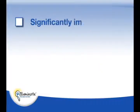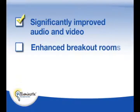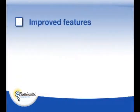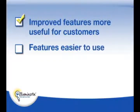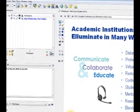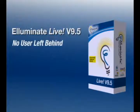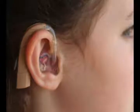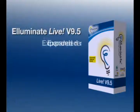Some of the things included in Eliminate Live version 9.5 include significantly improved audio and video, enhancements to breakout rooms. We've really dug in, and this release is less about a bunch of new features than it is going back to some of the key features inside of Eliminate Live that folks use in every session and asking the question: how can we make these more useful and easier to use? We've also continued our focus on making sure that the product is accessible to all users, including those with disabilities, so we've added some key new capabilities for accessibility in this release.